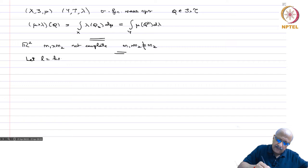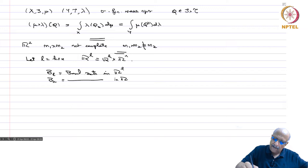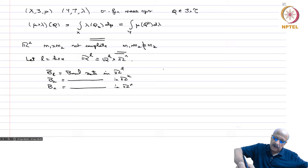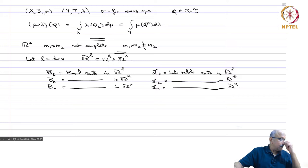Let L equal k plus n, and then we consider R^L as equal to R^k cross R^n. Then B^L equals the Borel sets in R^L, B^k equals the Borel sets in R^k, and B^n equals the Borel sets in R^n. We also have L^L equals the Lebesgue measurable sets in R^L, L^k equals the Lebesgue measurable sets in R^k, and L^n equals the Lebesgue measurable sets in R^n.